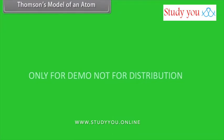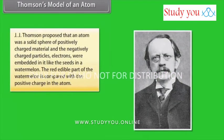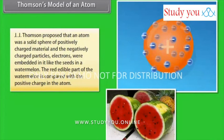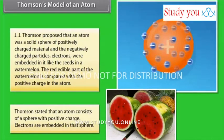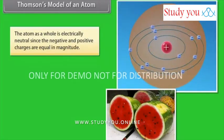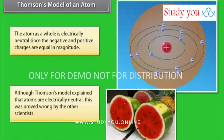Thomson's Model of an Atom. J.J. Thomson proposed that an atom was a solid sphere of positively charged material and the negatively charged particles, electrons, were embedded in it like the seeds in a watermelon. The red edible part of the watermelon is compared with a positive charge in the atom. Thomson stated that an atom consists of a sphere with positive charge. Electrons are embedded in that sphere. The atom as a whole is electrically neutral since the negative and positive charges are equal in magnitude. Although Thomson's model explained that atoms are electrically neutral, this was proved wrong by other scientists.